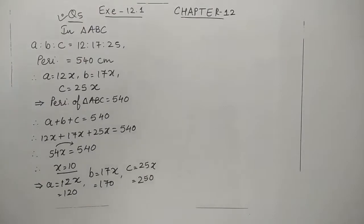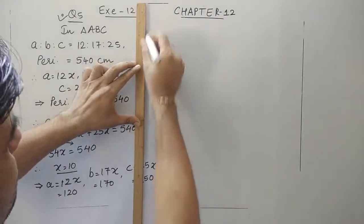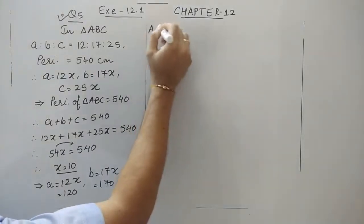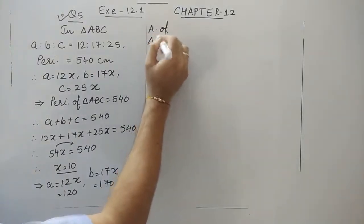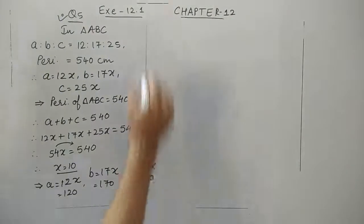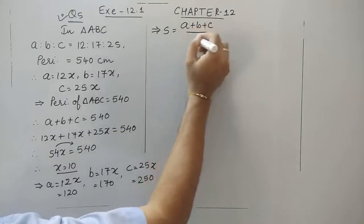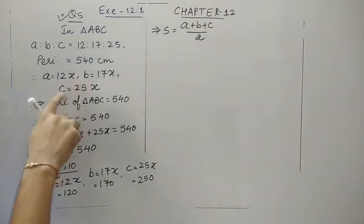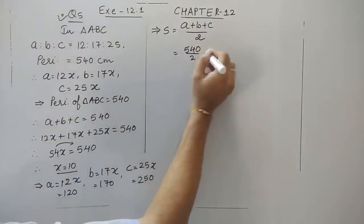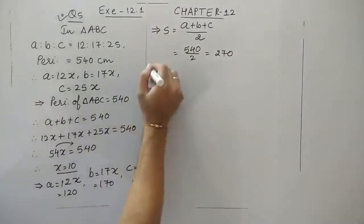Whenever we have the lengths of all sides we can find the area using Heron's formula. Before finding the area, let us first find the semi-perimeter: S equals A plus B plus C divided by 2. Since A plus B plus C equals 540, half of 540 is 270. So the semi-perimeter is 270.